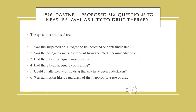In 1996, Dartnel proposed six questions to measure the appropriateness of drug therapy: whether the suspected drug is indicated or contraindicated, whether the dosage form is according to recommended conditions, whether adequate monitoring and counseling is done, whether an alternative drug or no drug should have been given, and whether the admission is rightly regardless of inappropriate drug use.